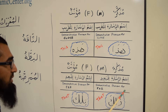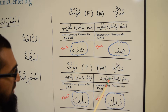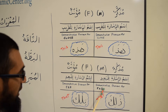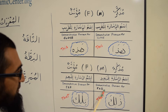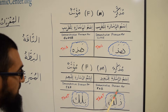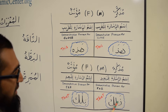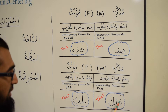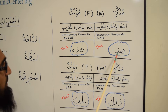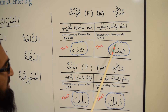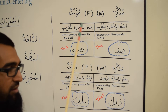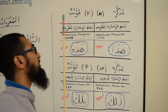Then we learned Ismulisharati lilbaeid — the demonstrative pronoun for something that is far — and it is also Mudhakkar, masculine. That is Thalika. So for instance, you say Thalika Kitabun — that is a book. Hadha Kitabun means this is a book, and Thalika Kitabun means that over there is a book.